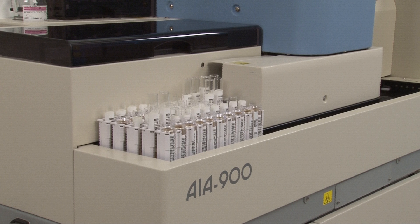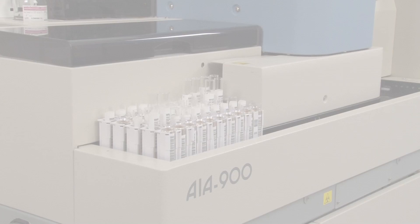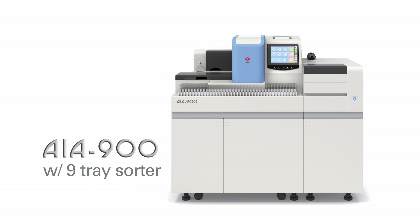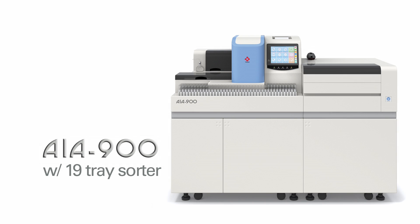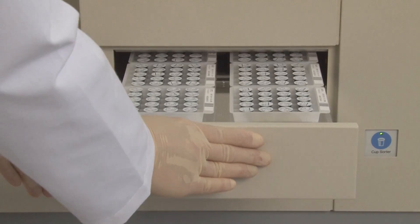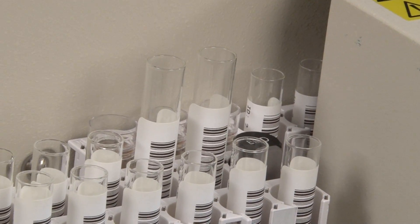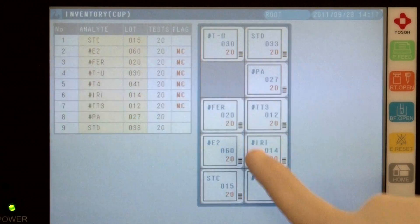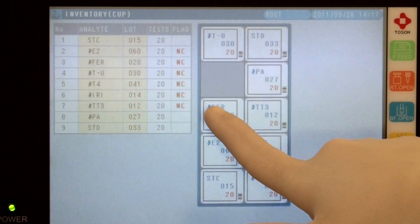For larger volumes or more automation, the AIA 900 can be equipped with an optional 9 or 19 tray reagent tray sorter. Once the reagent tray is loaded in the reagent drawer, the barcodes on the trays and sample cups are read and the inventory is stored in memory for easy review by the operator.